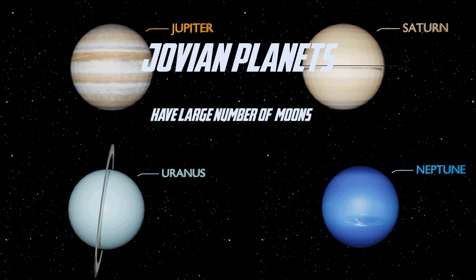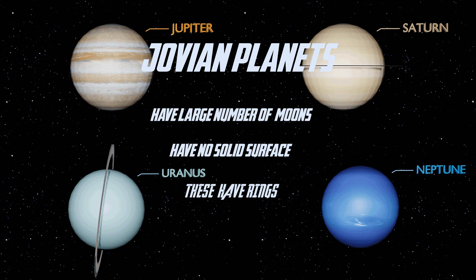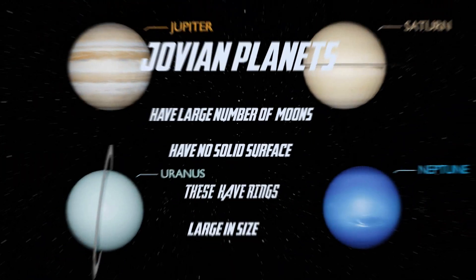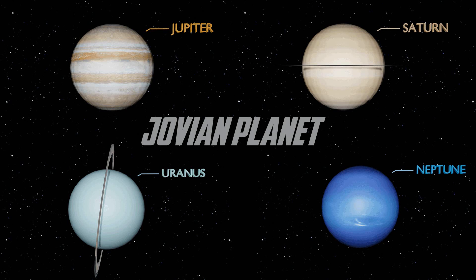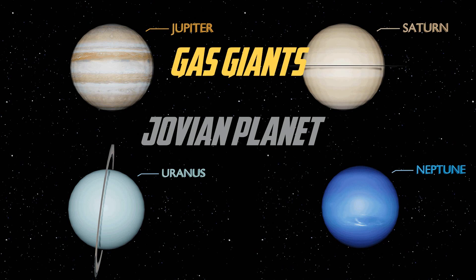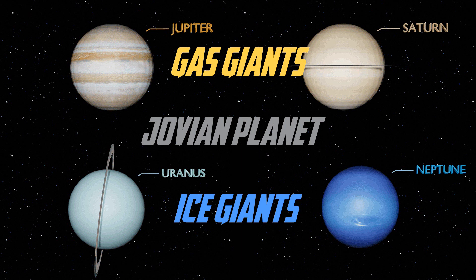Jovian planets have a large number of moons, have no solid surface, they have rings, and they are large in size. Jovian planets mainly contain gas giants like Jupiter and Saturn, and ice giants like Uranus and Neptune.